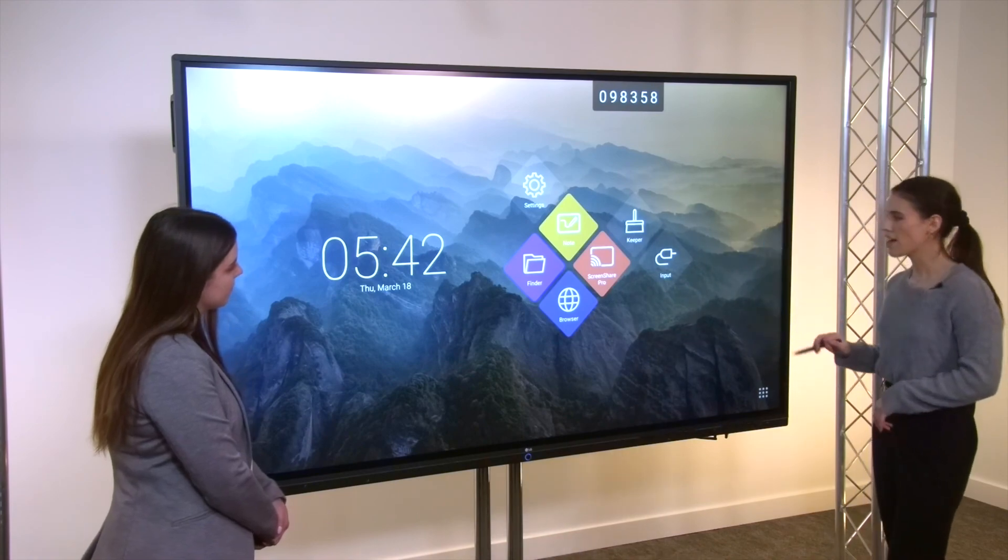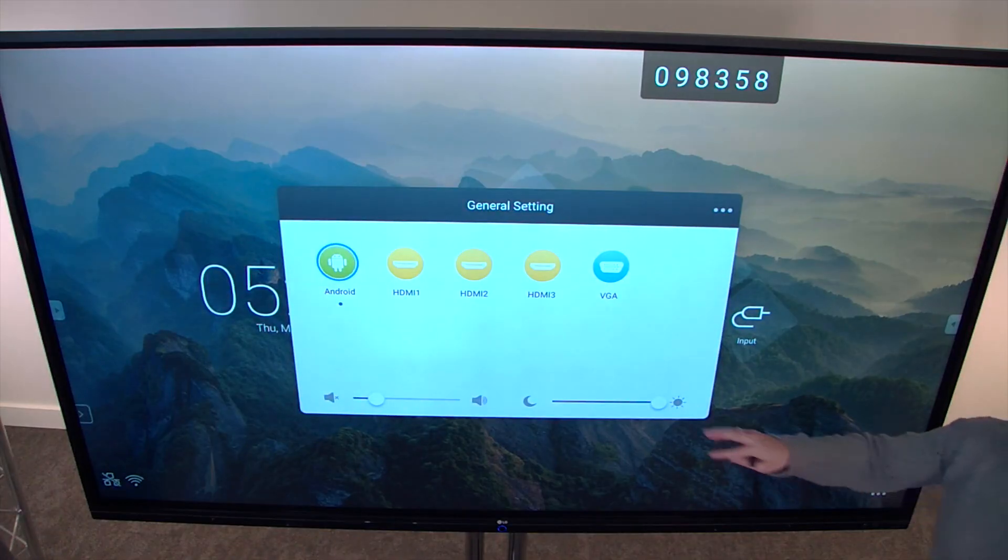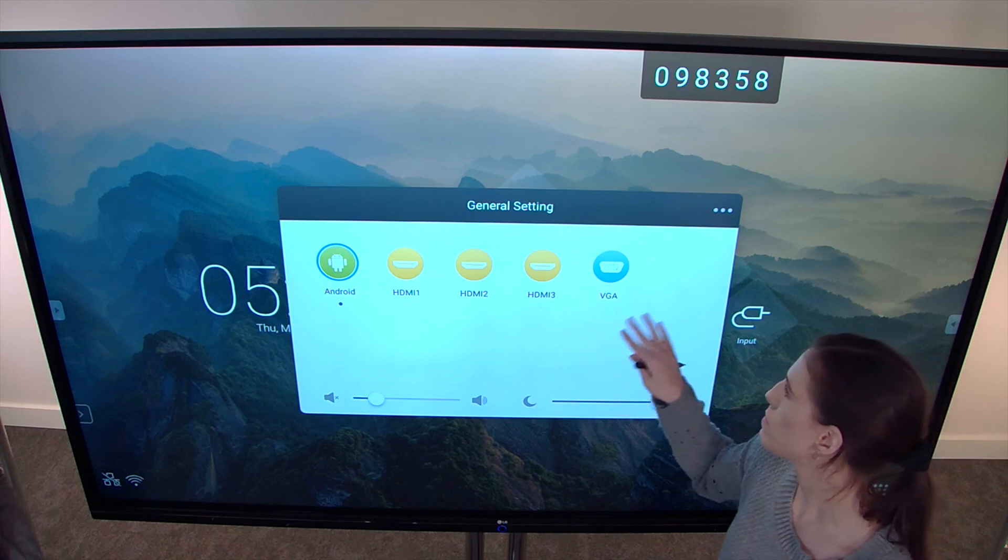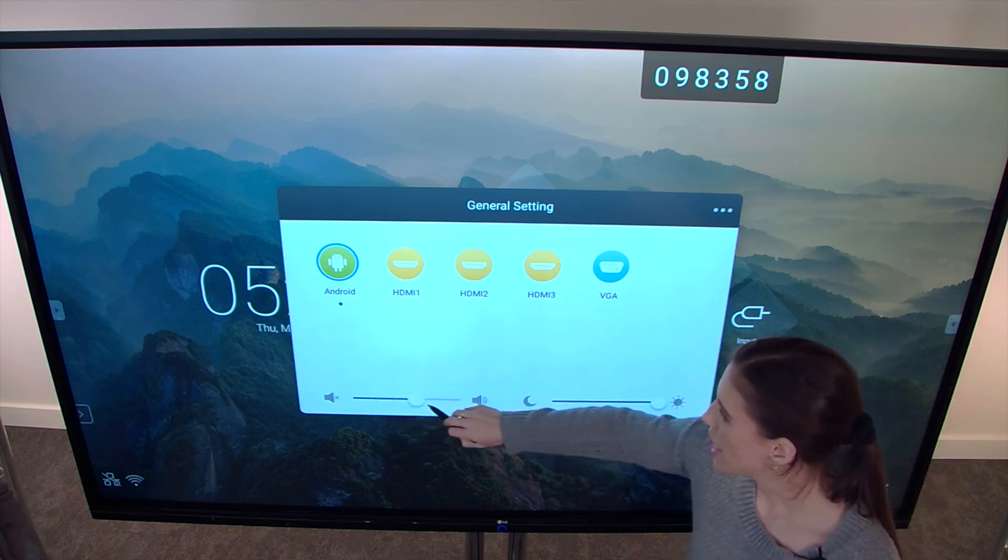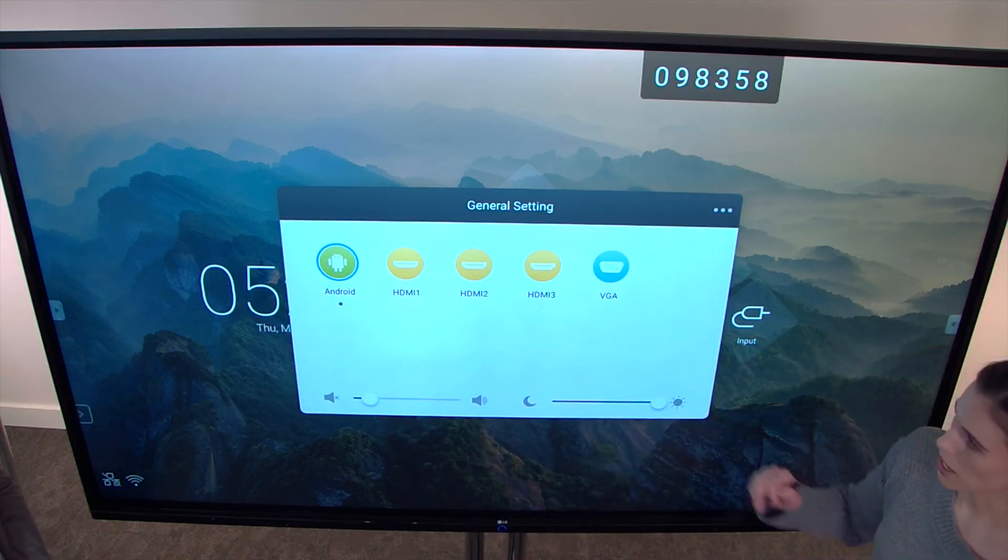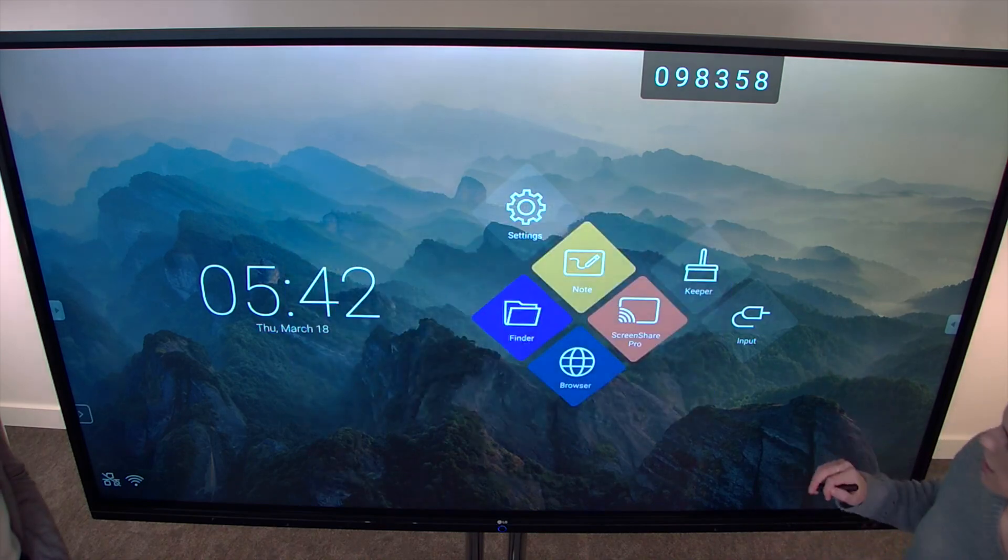And then lastly, we have just our general settings. So you have your inputs here. We have three HDMIs, a VGA, and then your volume, and of course your brightness.